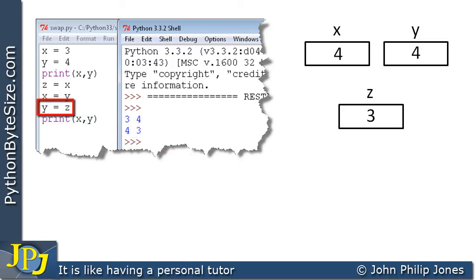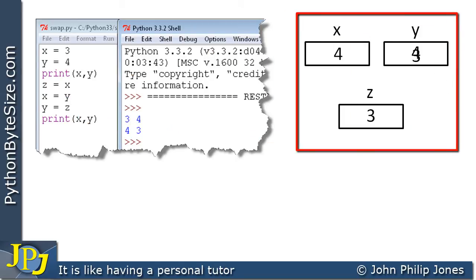Of course, we now go on to execute this line, y is assigned z. Now what this will do, it'll take what's in z, and it'll transfer it to y. And now y has the value of 3. And we can see here that x and y have now had their values swapped.